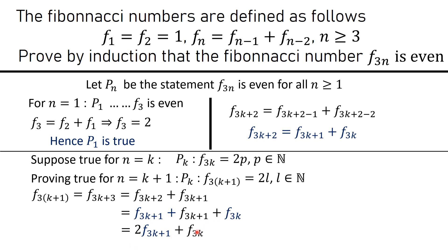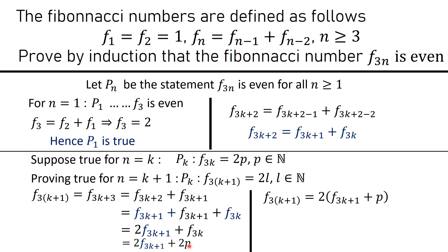Since our induction hypothesis tells us f(3k) is even, we write f(3k) = 2p for some integer p. Therefore f(3k+3) = 2·f(3k+1) + 2p = 2·(f(3k+1) + p). Setting l = f(3k+1) + p, we have f(3k+3) = 2l, which is even. The induction step is complete.